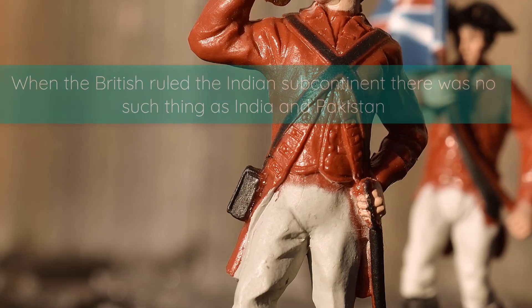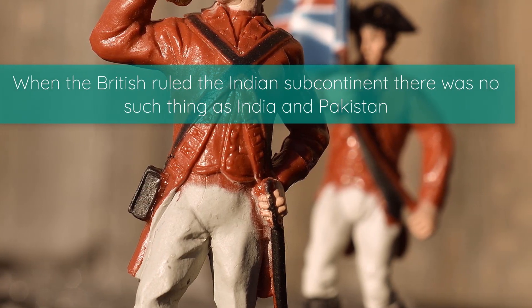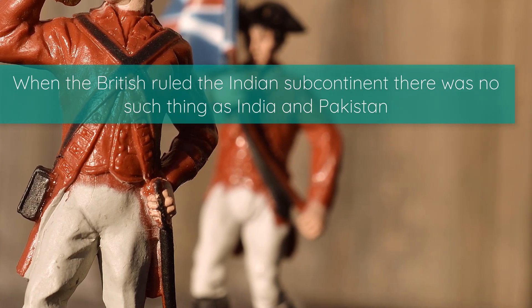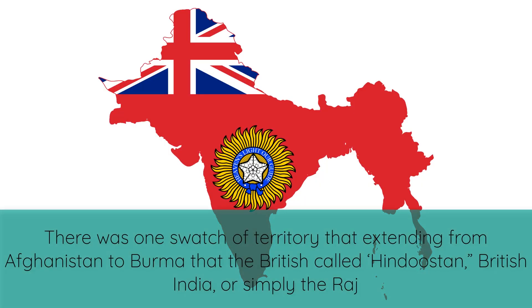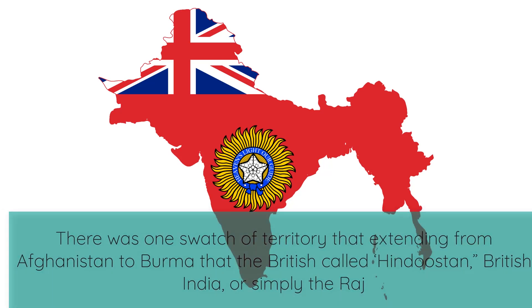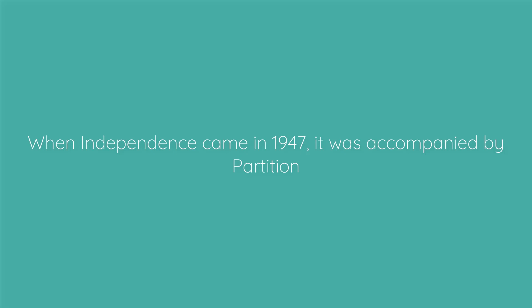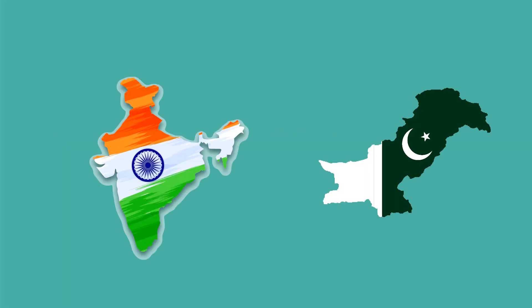When the British ruled the Indian subcontinent, there was no such thing as India and Pakistan. There was one swath of territory extending from Afghanistan to Burma that the British called Hindustan, British India, or simply the Raj. However, when independence came in 1947, it was accompanied by partition, which split Hindustan into two countries: India and Pakistan.